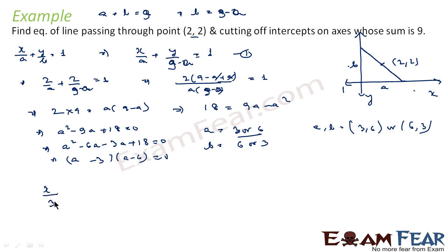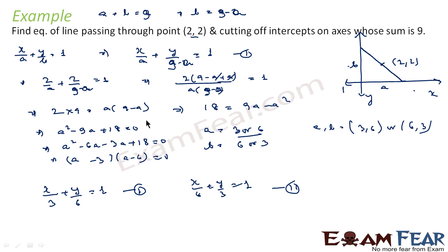So we will have two equations. First equation when a = 3, b = 6: x/3 + y/6 = 1. Second equation when a = 6, b = 3: x/6 + y/3 = 1. These are the two possible equations for this scenario. We used the intercept form, replaced b with 9 - a, substituted the point (2, 2) to find a, then used b = 9 - a to find b.